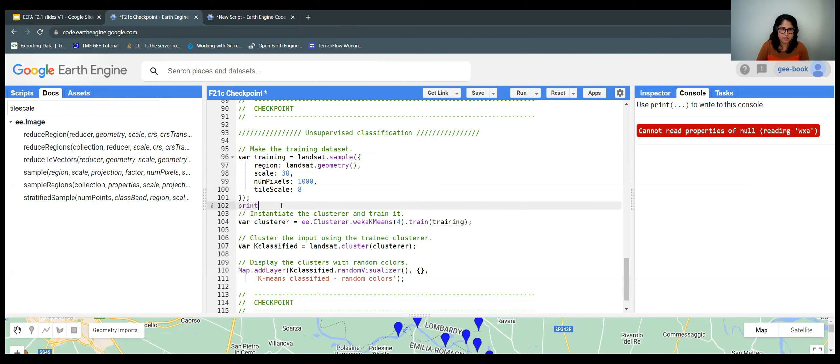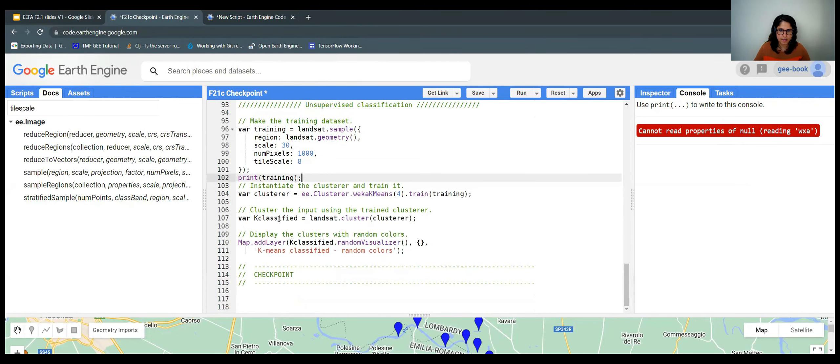I'm going to just print here this training feature collection so you can see. And here, instead of doing dot classify, we use dot cluster, which is just the classification, but unsupervised classification. And then I add that to the map.